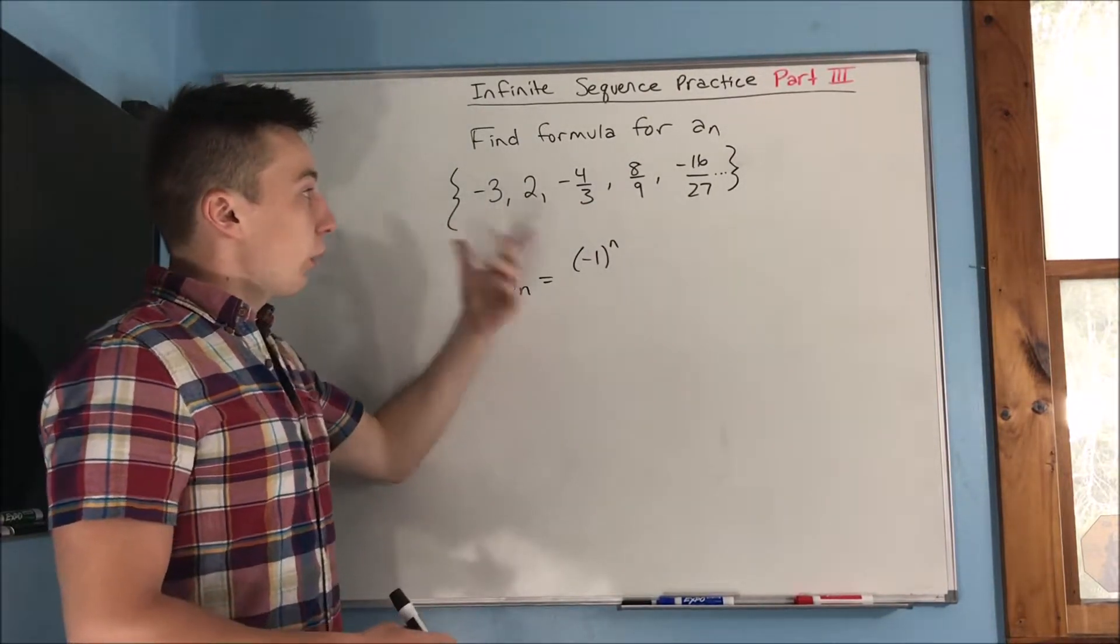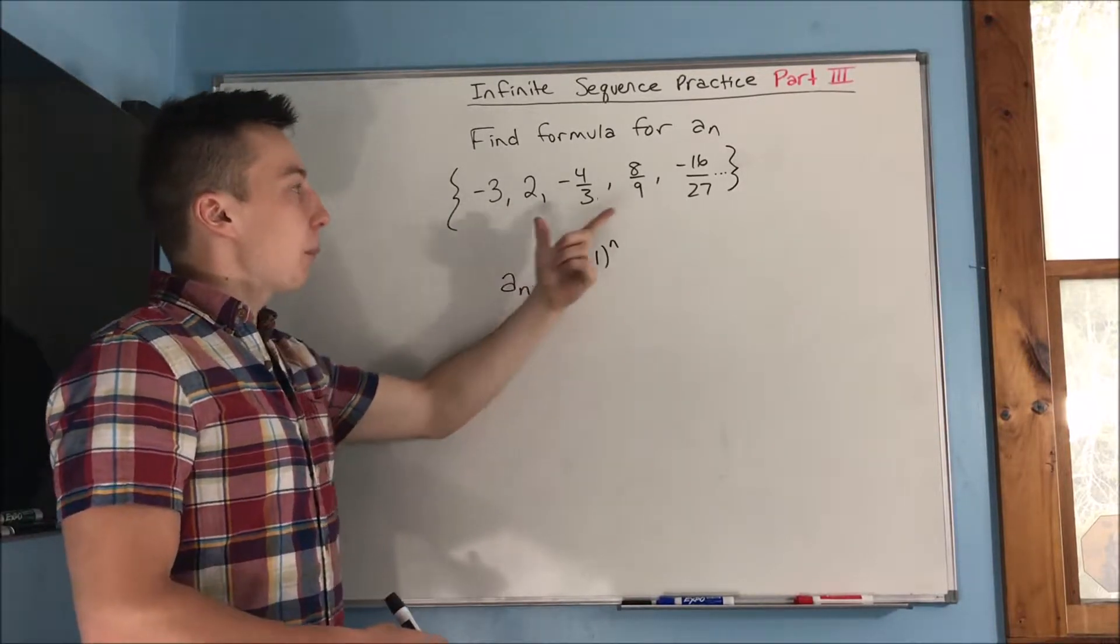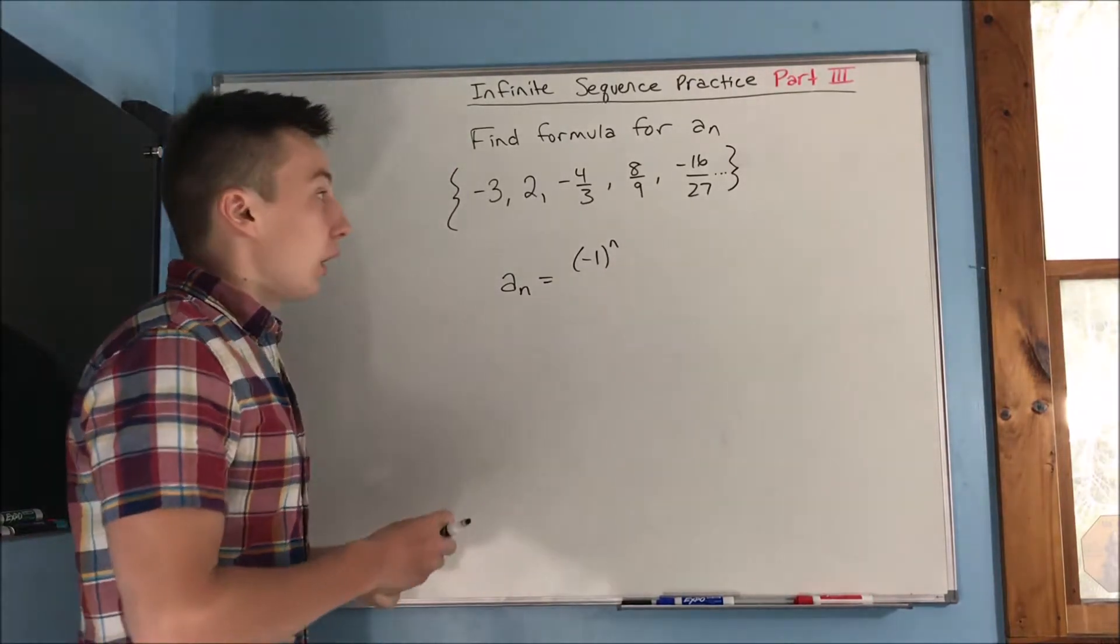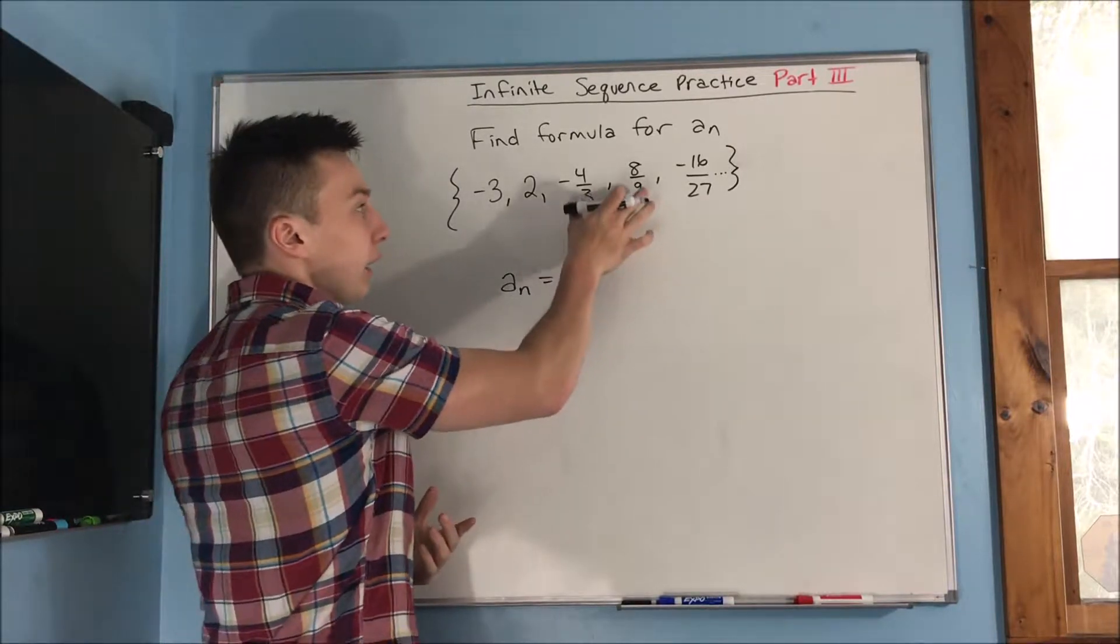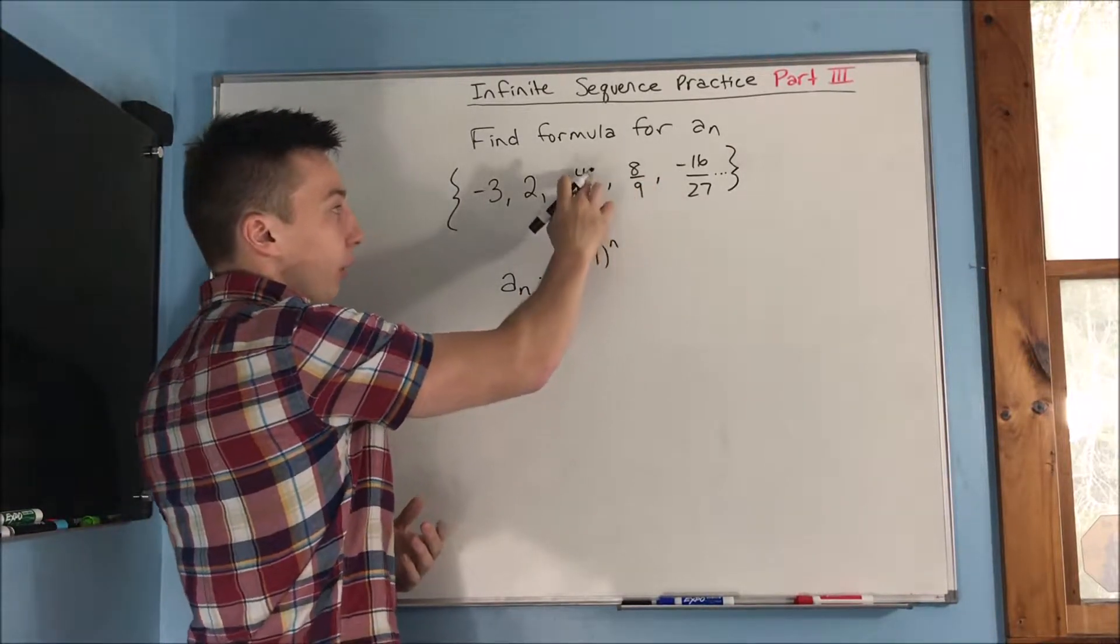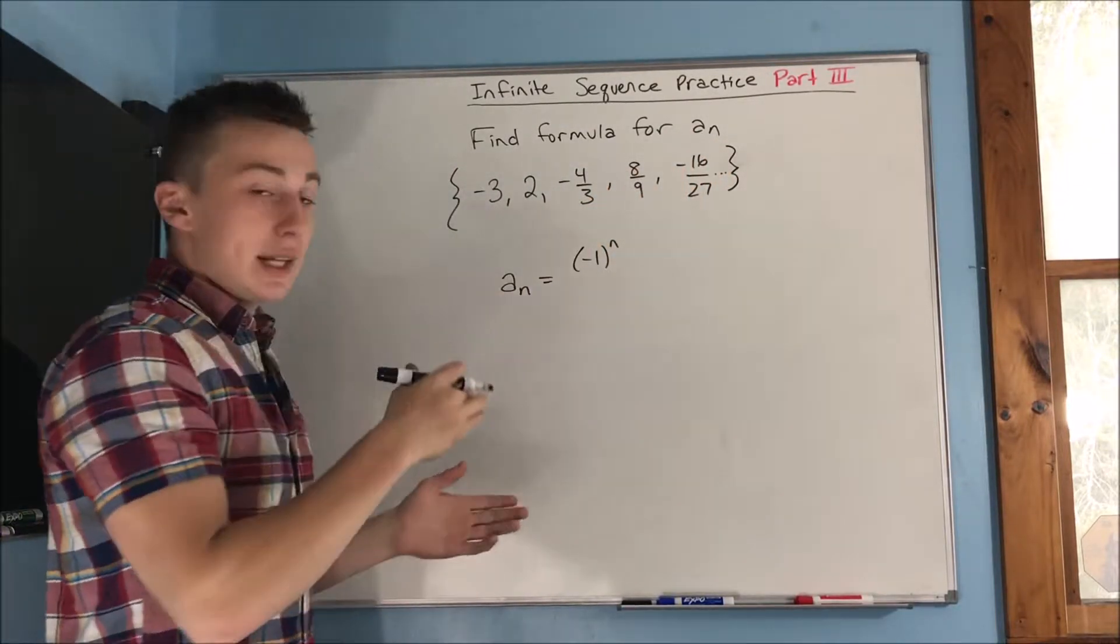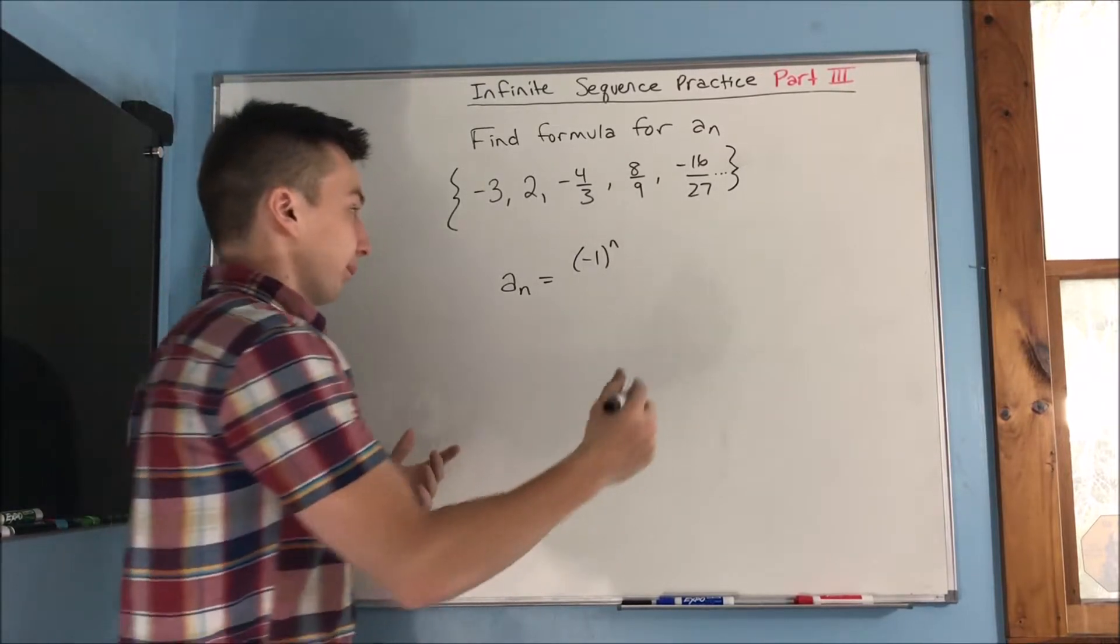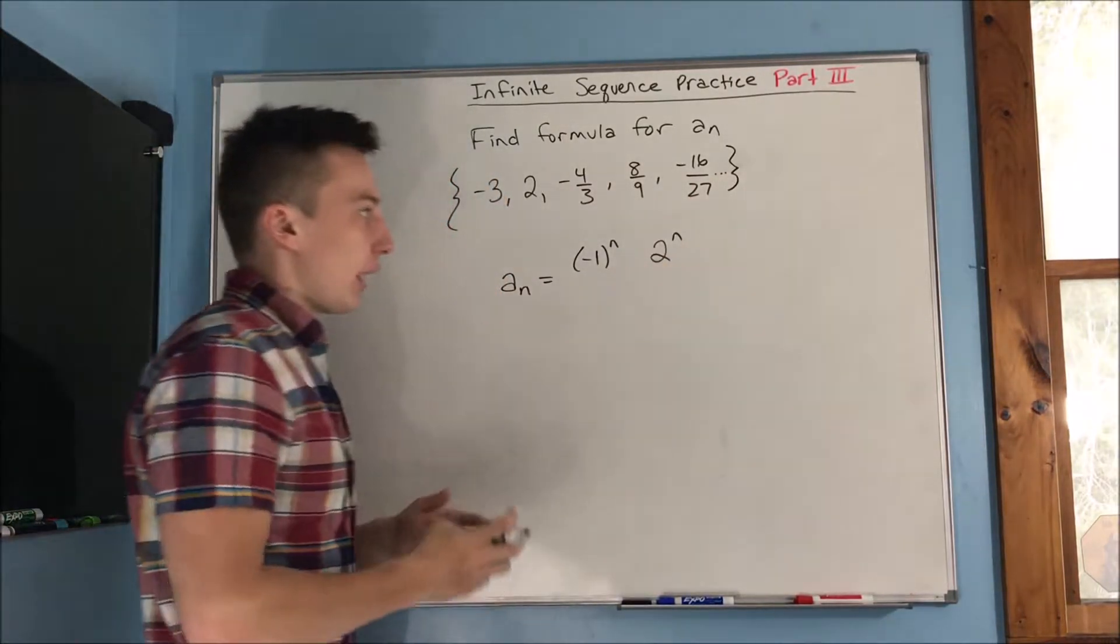Now next, we can't really see too much from this negative three and two here, but when it starts to break up into a fraction, you can kind of see a lot more of what's happening. So I would focus more on this part. You see that the numerator is going from four to eight to sixteen, which shows you that it's basically two raised to a power. So over here you can have two to the n something.